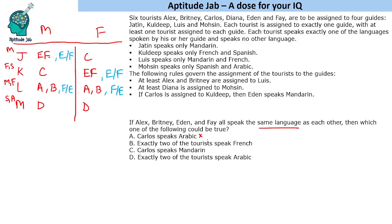Evaluating the options: 'Exactly two tourists speak French' — if all four speak French, we have four speaking French; if all speak Mandarin, only zero or one person speaks French through Carlos. We cannot get exactly two. 'Carlos speaks Mandarin' — if all four speak Mandarin and Carlos is at Kuldeep, Carlos could be assigned to Jatin speaking Mandarin — but wait, Kuldeep doesn't speak Mandarin. However, in the Mandarin case, Carlos could speak Mandarin by being assigned to Jatin. So Carlos speaks Mandarin could be true. 'Exactly two tourists speak Arabic' — only Diana can speak Arabic, so this is false.